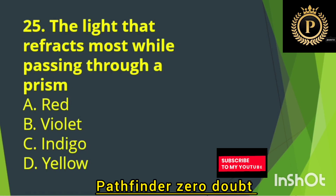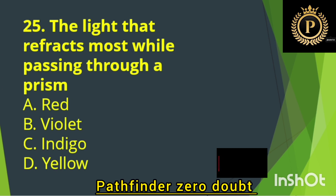The light that refracts most while passing through a prism is — Option B: Violet.